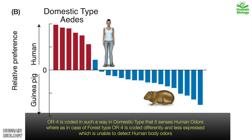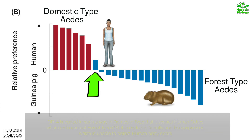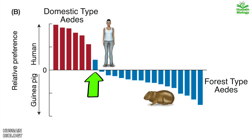Whereas most wild type colonies prefer the guinea pig. As we can see, one or two colonies of wild type Aedes were also attracted to humans, but the majority feeds on guinea pig.